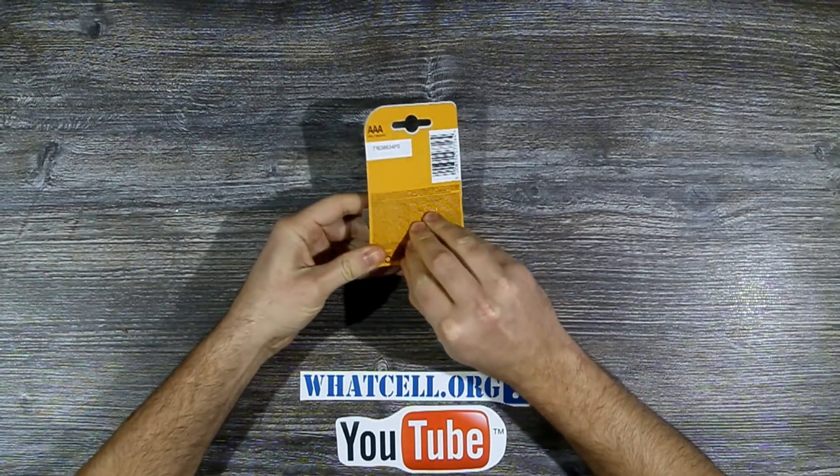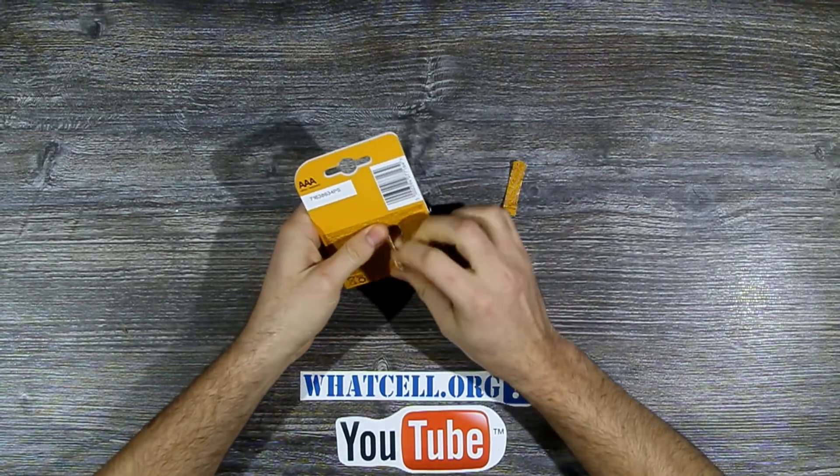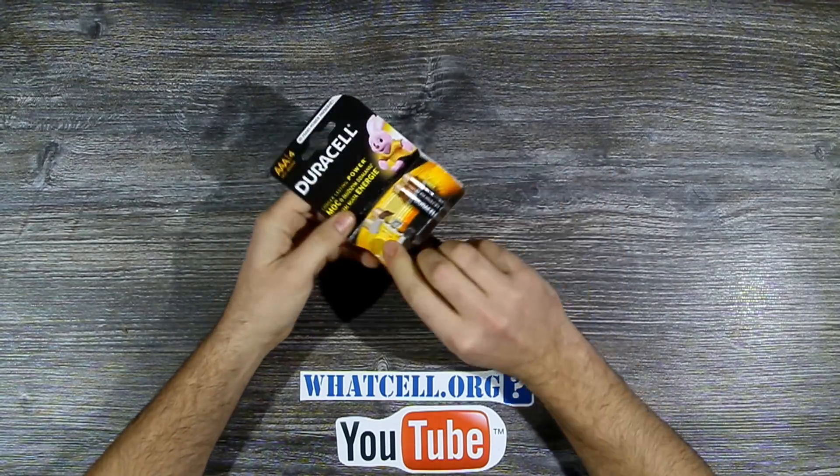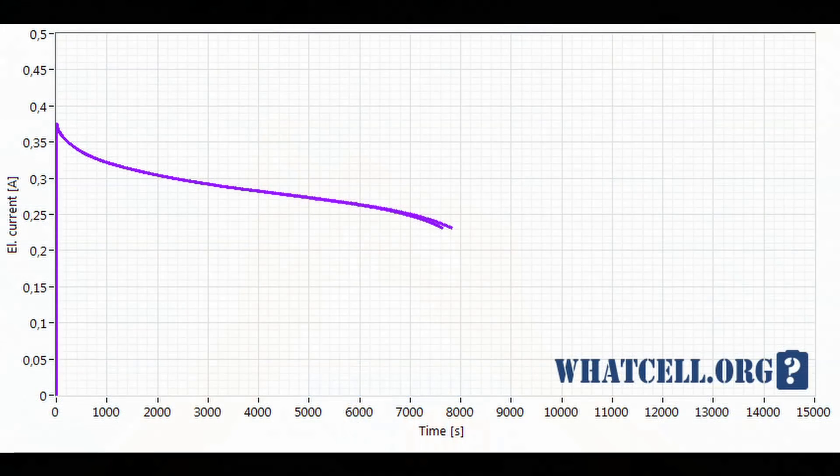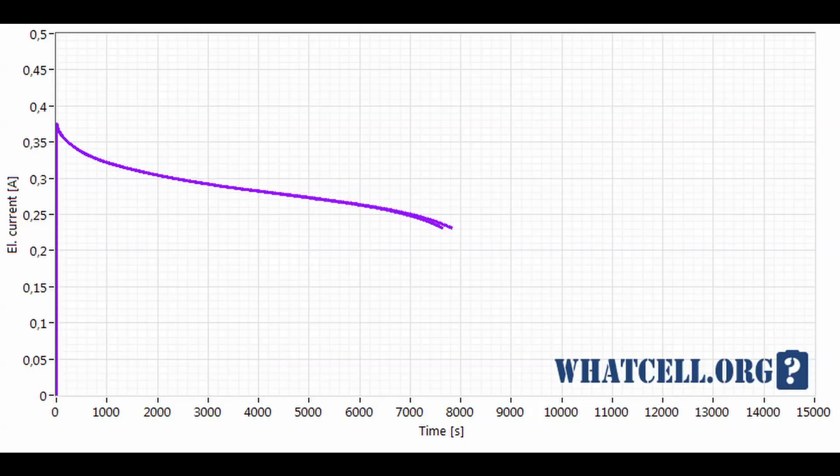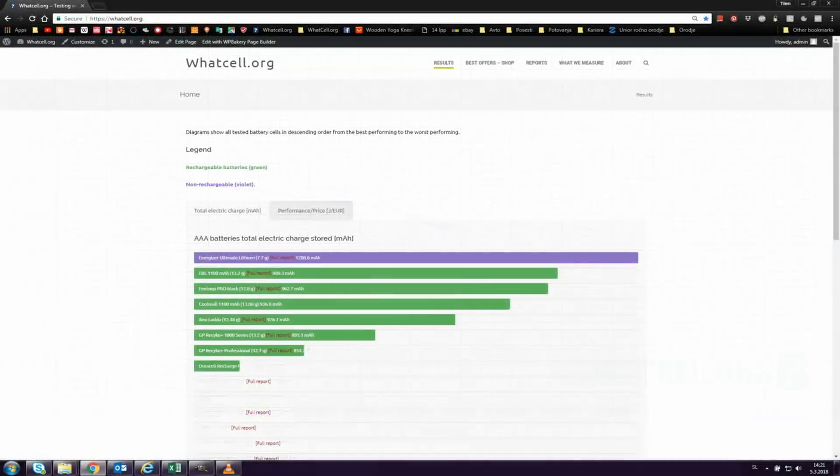And this is how Duracell performed compared to currently best cell on whatcell.org. Duracell Basic on average packed 615.5 mAh at 11.3 grams.